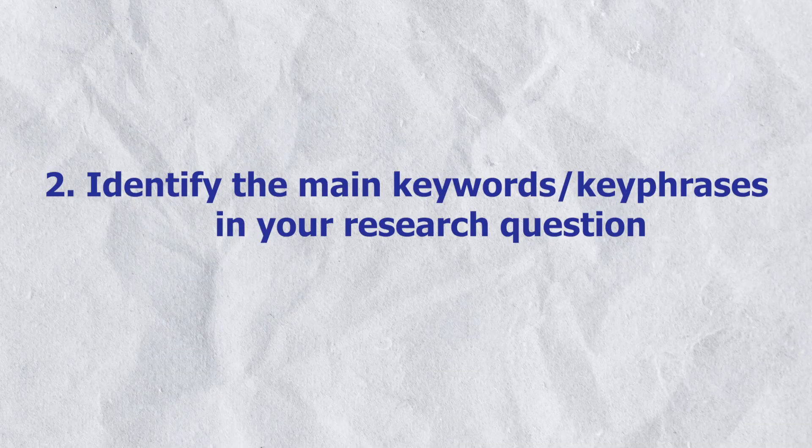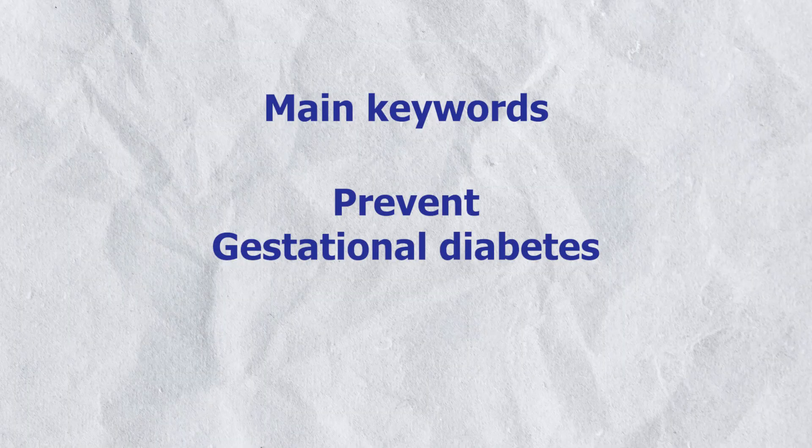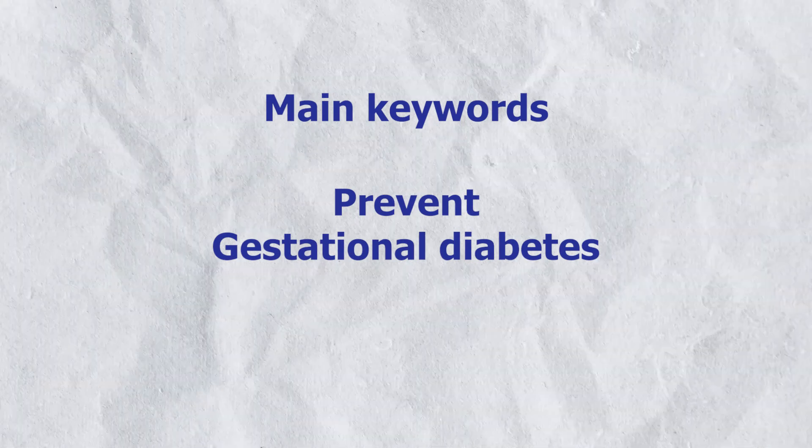Step two: identify the main keywords or key phrases in your research question. For the research question 'What are the most effective strategies to prevent gestational diabetes?', the main keywords are 'prevent' and 'gestational diabetes.' To get the main keywords or key phrases from your research question, just remove the conjunctions.